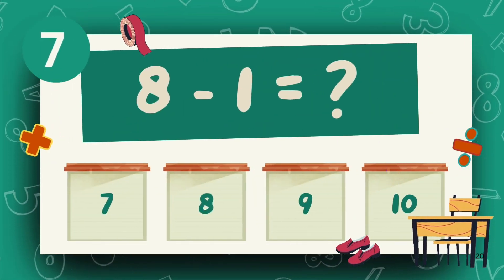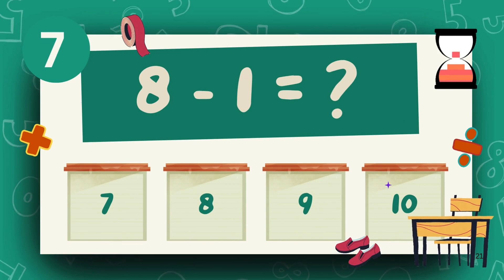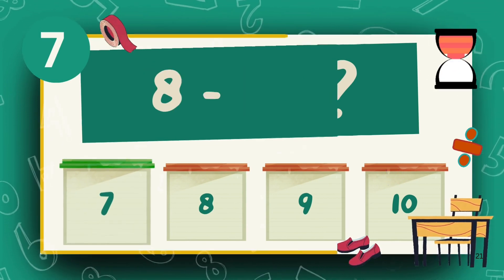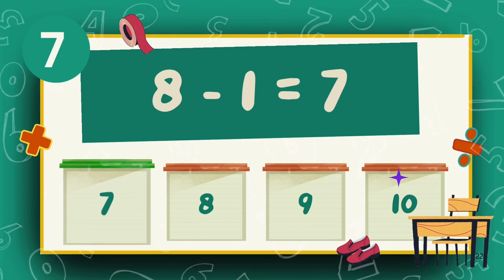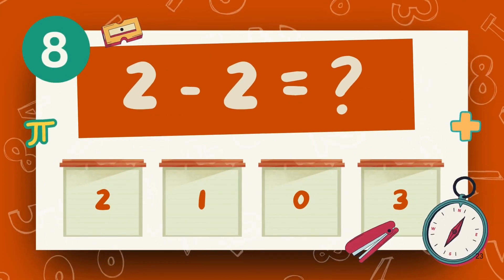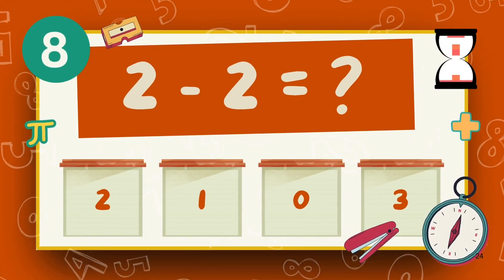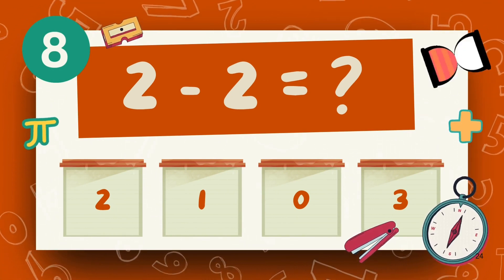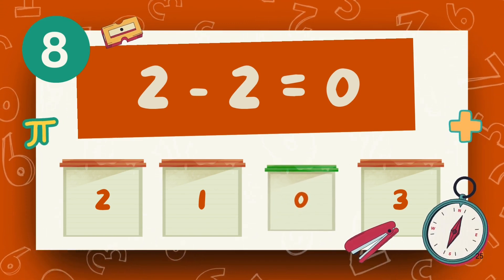What is 8 minus 1? The answer is 7. What is 2 minus 2? The answer is 0.